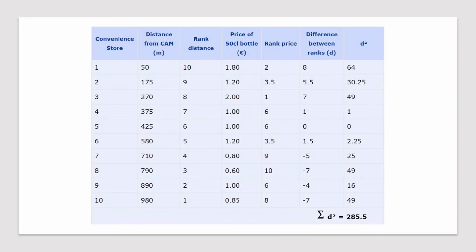Now let's look at another example. This example is a little bit different and a little bit harder. We have more pairs, so the n number will be greater. And if you look very carefully, in certain situations there are some strange ranking numbers. This works out because often one of the numbers might be the same — so there might be two rank threes, for example.